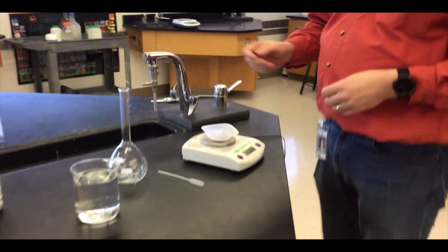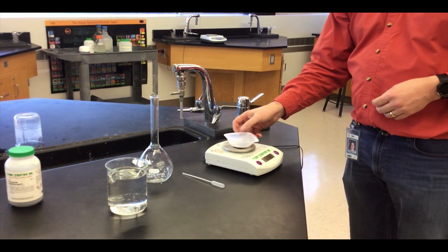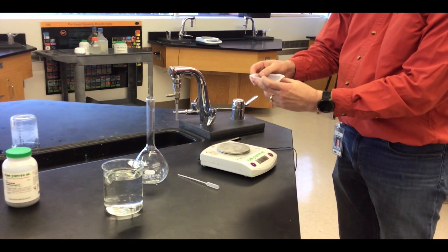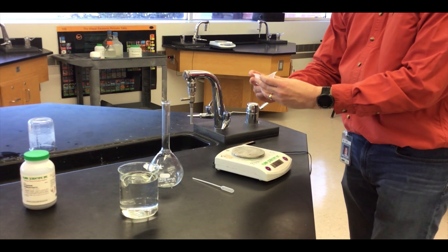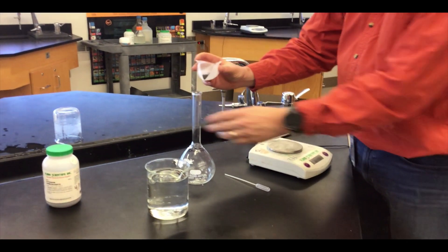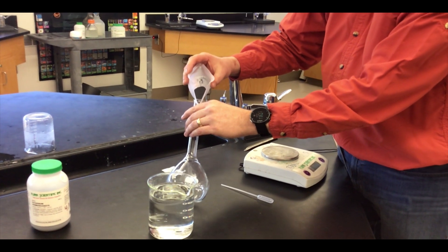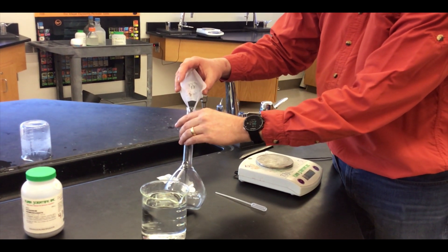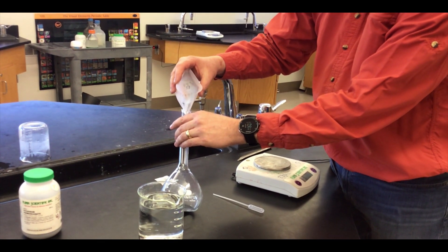So the first thing we want to do once we have our chemical that we're going to make a solution for, our solute, we're going to take that and pour it into the neck of the bottle, of the flask I should say.